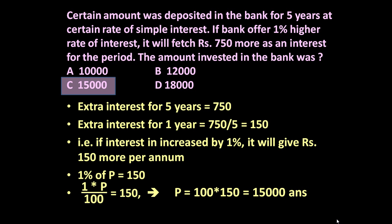So the answer is 15,000. If Rs. 15,000 is invested in the bank and the bank decides to increase the interest rate by 1%, it will give Rs. 150 more per annum as interest.